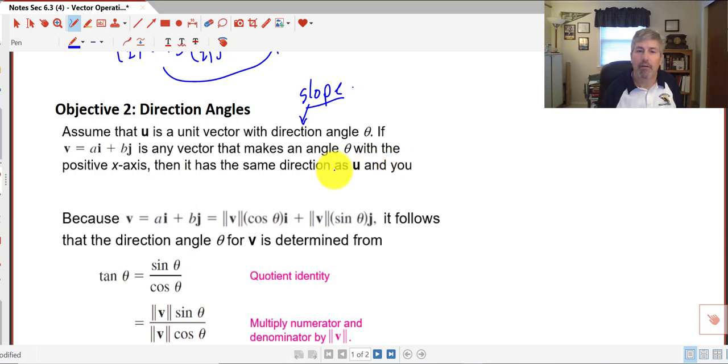If we have slope and we have direction, we might be thinking here tangent, because tangent is slope. So let's take a look.